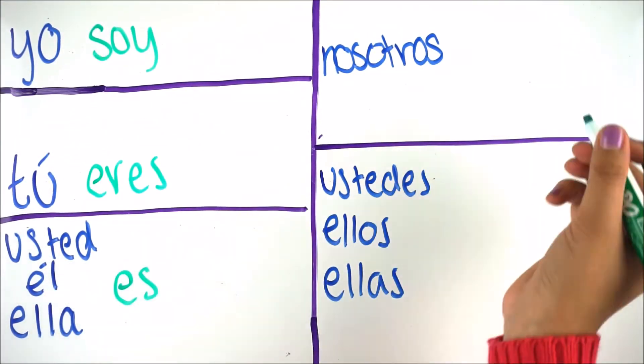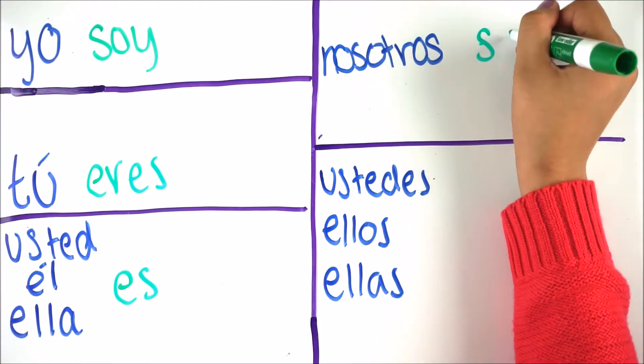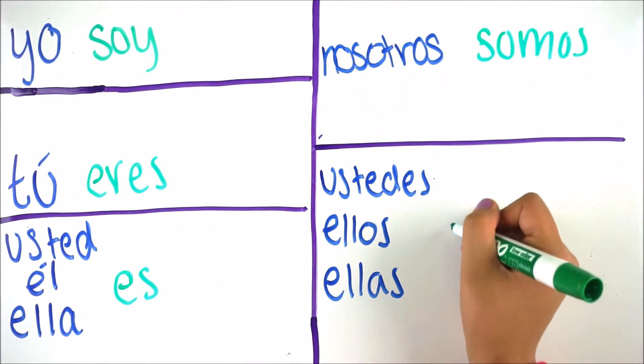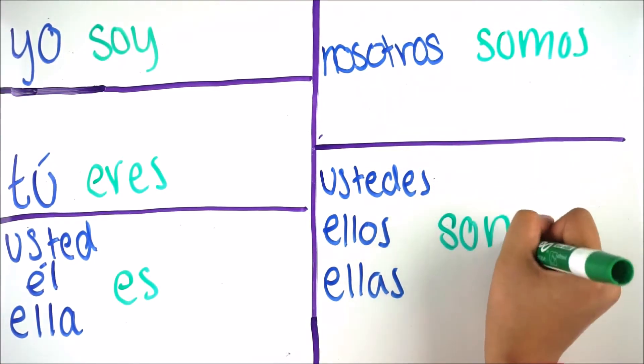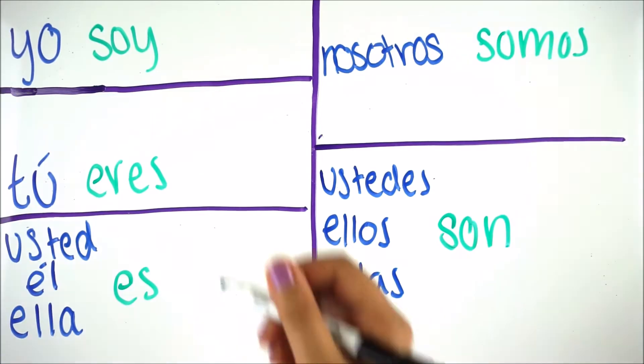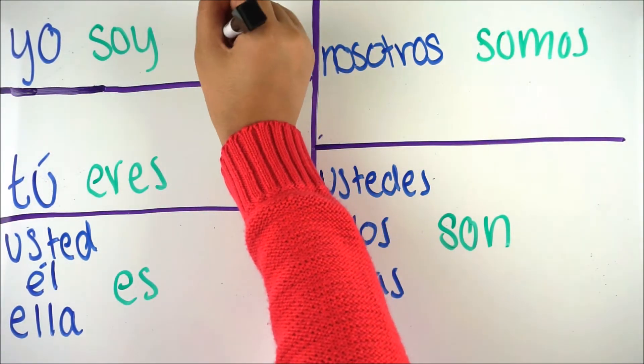The conjugation for yo is soy; tú is eres; usted, él, and ella is es; nosotros is somos; ustedes, ellos, and ellas is son.